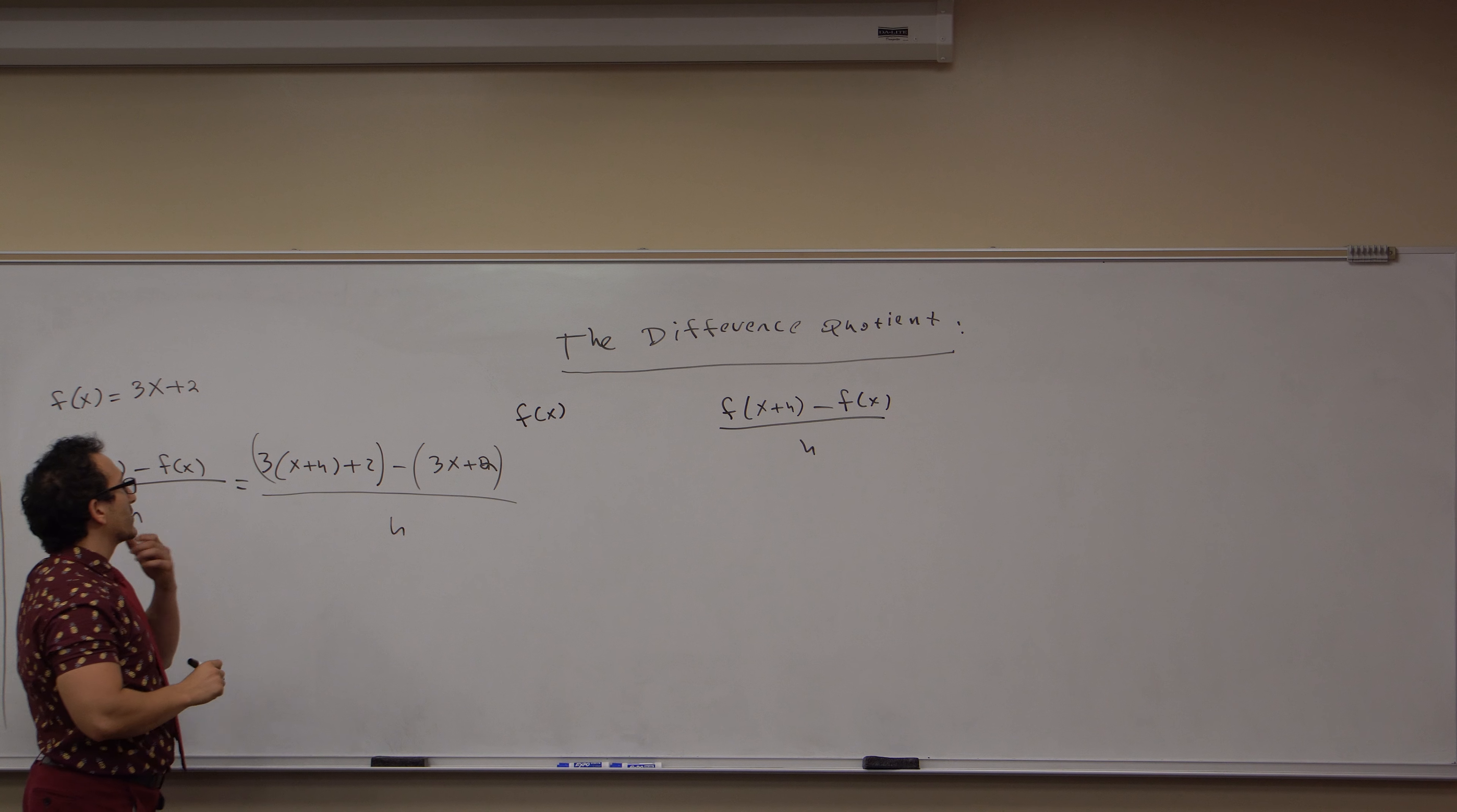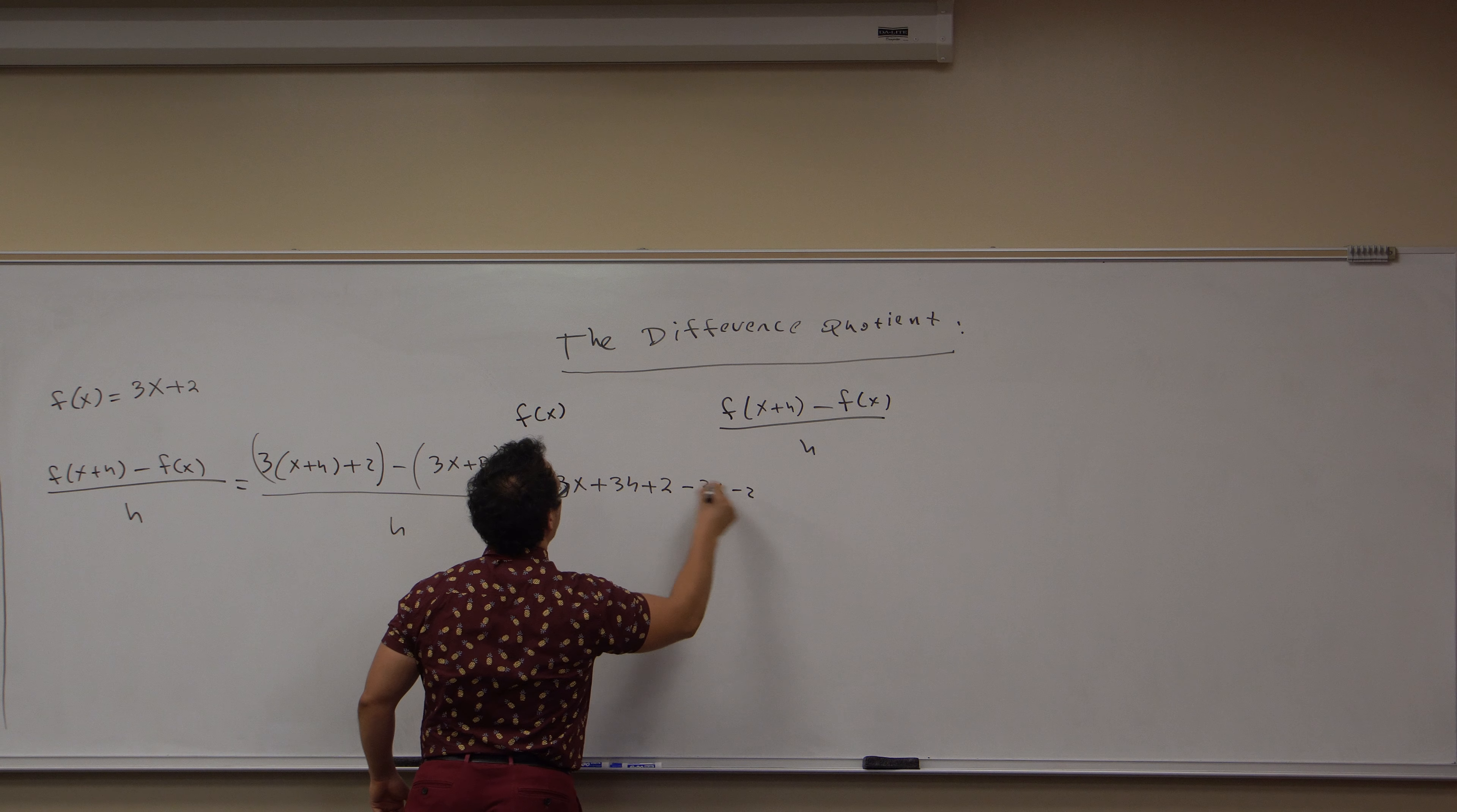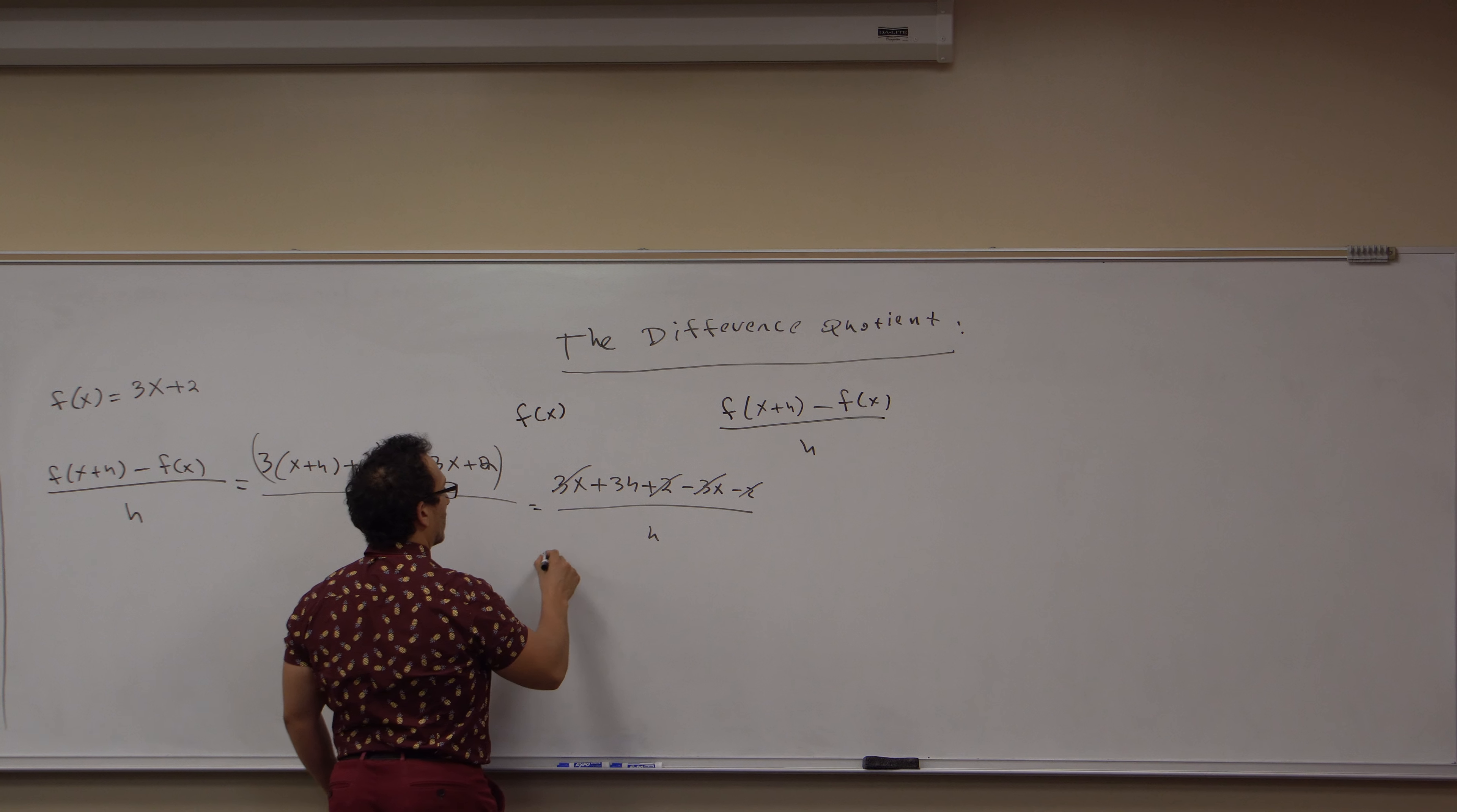Now I distribute this 3 and subtract that term here. So I get this is equal to 3x plus 3h plus 2 minus 3x minus 2 all over h. I cancel out the 3x terms. I cancel out the minus 2 terms.